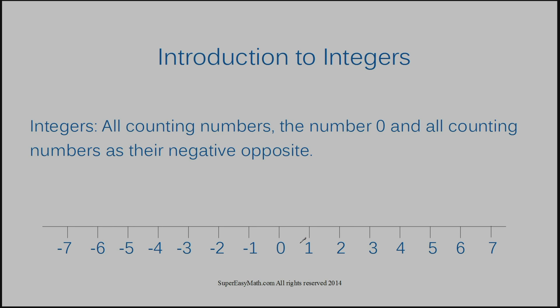Remember, integers also include zero. And then all of those numbers — one, two, three, four, five, six, seven — in their negative form are also integers. So negative one, negative two, negative three, negative four.